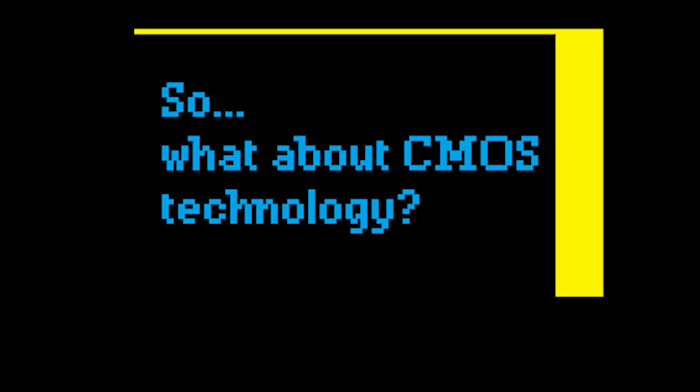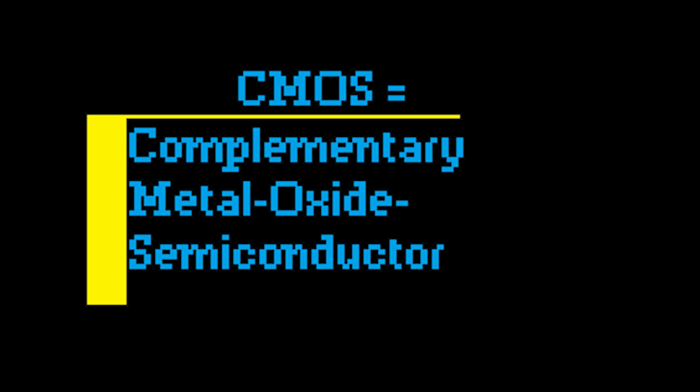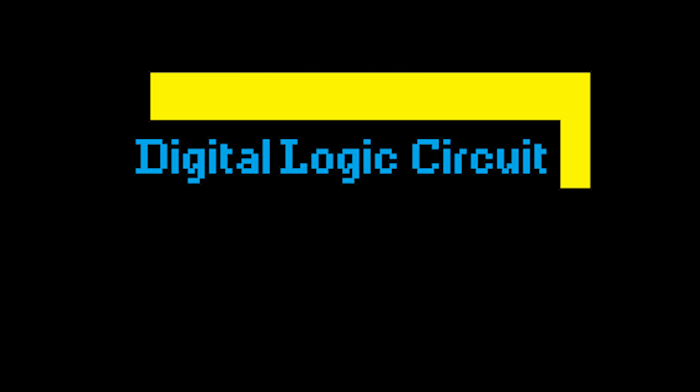For your information, CMOS technology is used in various ICs such as microprocessors, microcontrollers, static RAM, and the one we're interested in today: digital logic circuits.